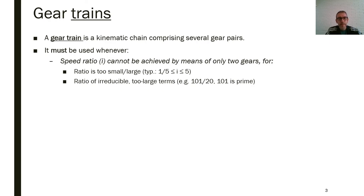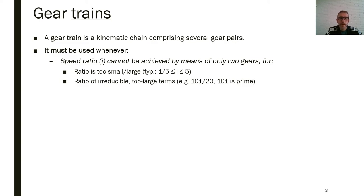Another situation is when we have a ratio of irreducible large terms in the fraction — for example, 101 to 20, where there is no way to further reduce the numbers. So we need to get numbers in the allowed range of teeth for the gears. For example, imagine the maximum teeth count for a gear is 100; in that case, 101 is above that maximum.